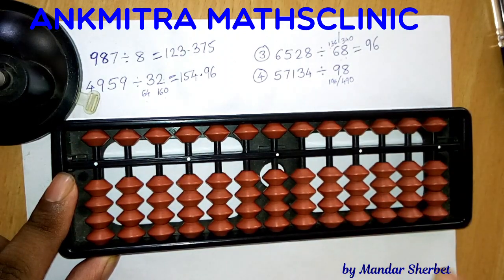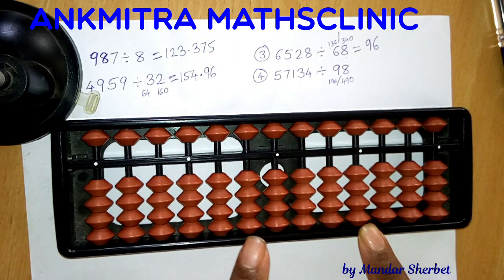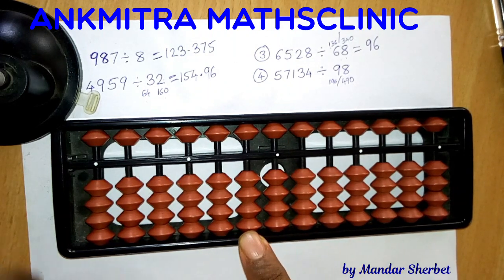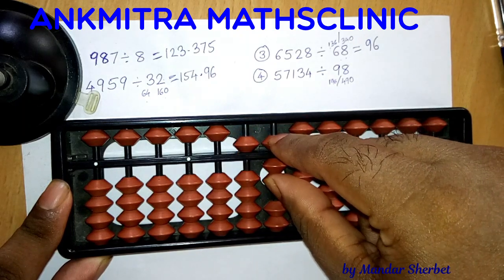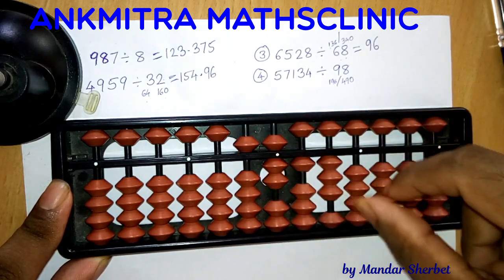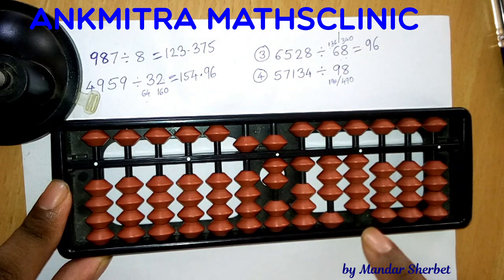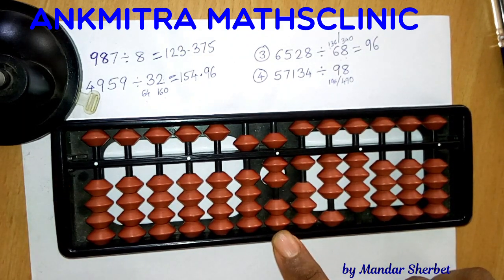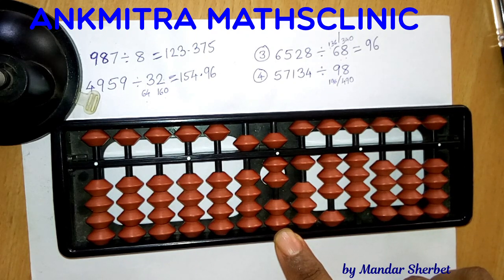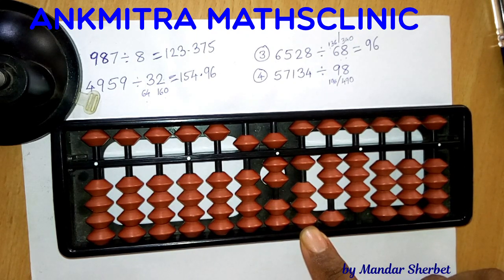Since this is a five-digit number, I'll start from the ten-thousands place. The number is 57,134. As usual, we start with the first two-digit number on the question set, which is 57. It is smaller than our divisor 98, so we cannot do anything on this rod. We move one rod further, and the number we have now is 571.